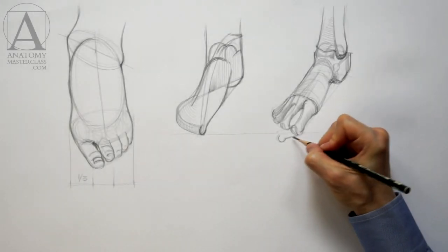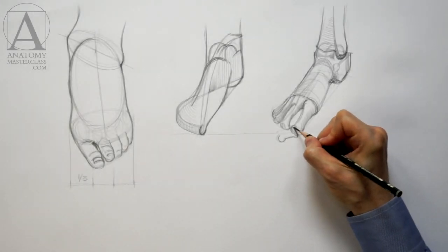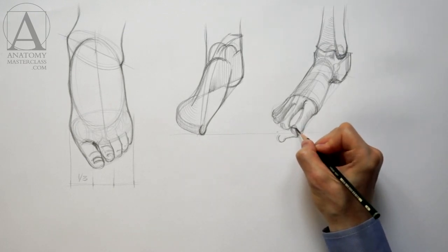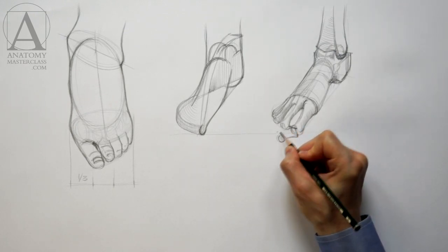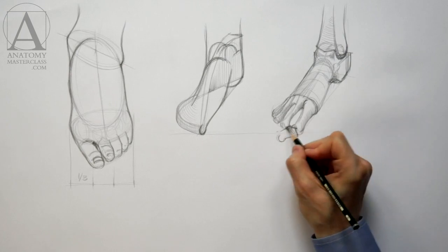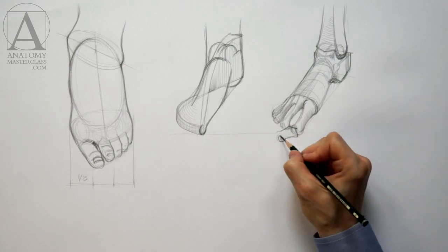The 14 phalanges of the toes are equivalent to the 14 phalanges of the fingers and thumb. There is also similarity between the thumb and great toe. They both have only two phalanges.